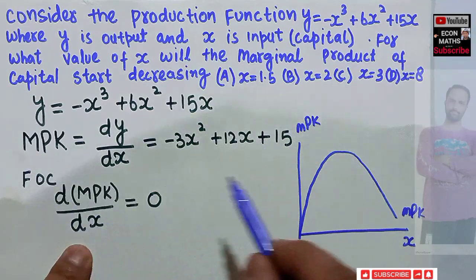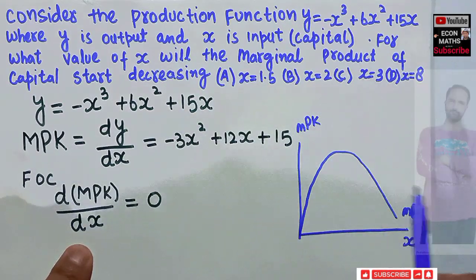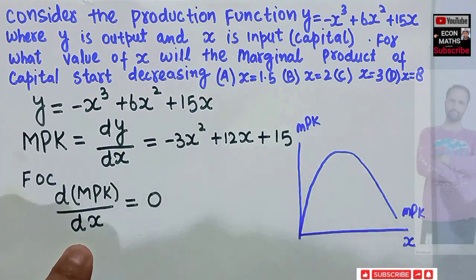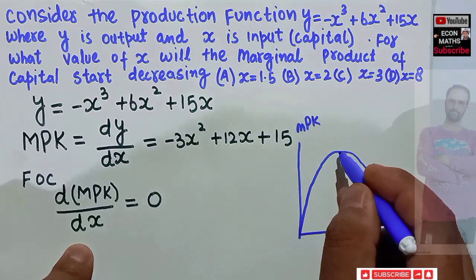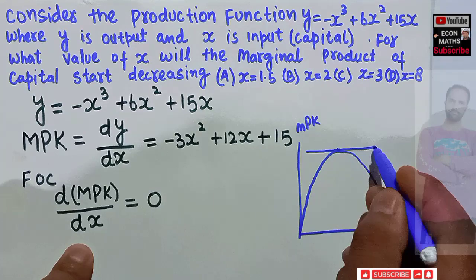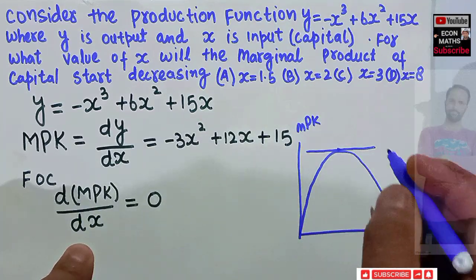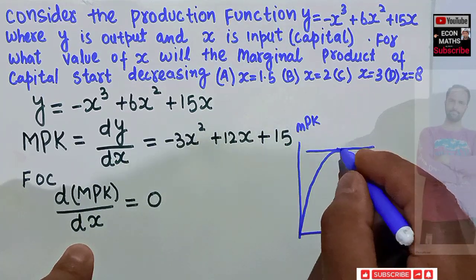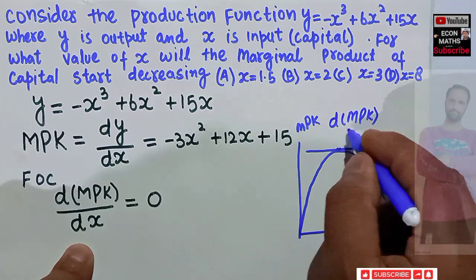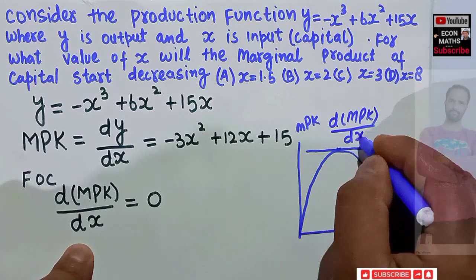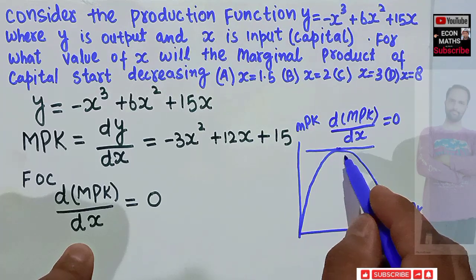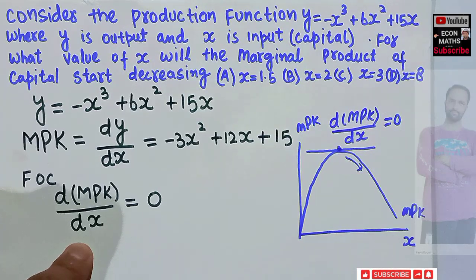So for this marginal product of capital to start diminishing, the derivative of this marginal product of capital function should be equal to 0. That means when it is at maximum, when the slope of this MPK curve is equal to 0, this point denotes d(MPK)/dx should be equal to 0. When it reaches maximum, obviously then it will start diminishing. So we need to find out this very point.